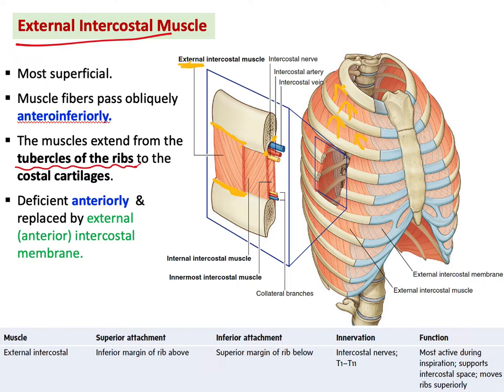The function of the external intercostal muscle: when contracted, it pulls the ribs up — it elevates the ribs. This means it is active during inspiration. When you take a breath, you need to increase the space of the thoracic cavity by moving the ribs superiorly, so the external intercostal muscle is very active during inspiration.